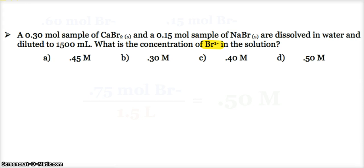Okay. So, do notice that it's asking us for the concentration of the bromide ion in the solution. If it was asking for regular concentration, I would have 0.3 moles plus 0.15 moles. That would be 0.45 moles of solute. I would divide that by 1.5 liters and my answer would be 0.30 molar. But that's not the case. Remember what we just talked about. In my 0.3 mole sample of calcium bromide, there's two bromide ions.